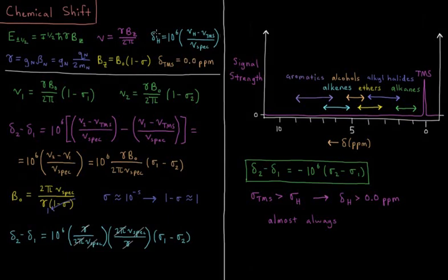We also define the chemical shift to be 10 to the sixth times the resonance frequency of our given hydrogen nucleus minus the resonance frequency of the reference molecule tetramethylsilane TMS, a silicon atom surrounded by four methyl groups, divided by the frequency of our NMR spectrometer typically measured in megahertz. The TMS forms a reference which is defined as 0.0 parts per million, which is the typical unit of our chemical shift.